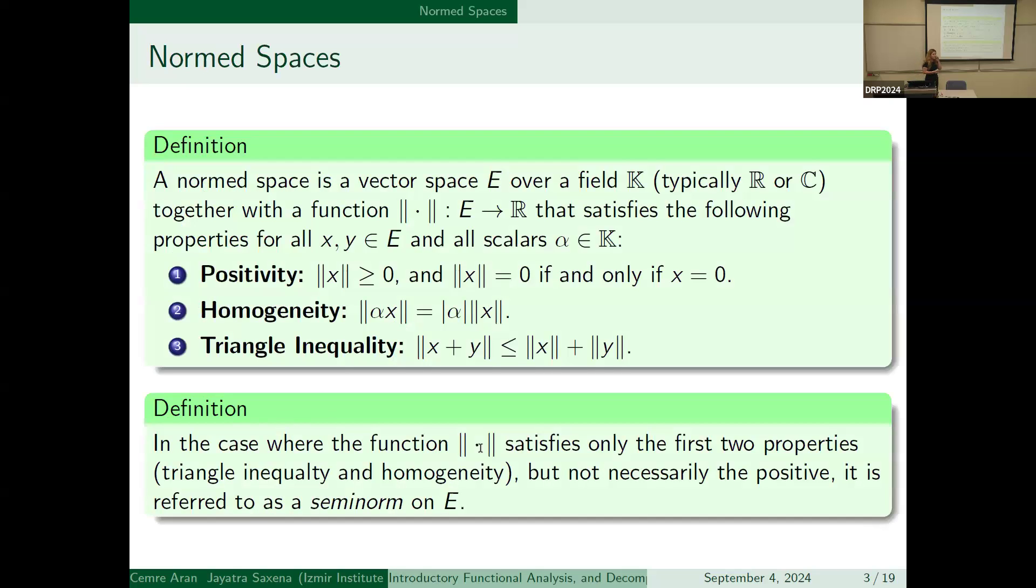A normed space is a vector space E over a field K, typically R or C, together with a function from E to R that satisfies these statements: positivity, homogeneity, and triangle inequality. In the case where the function satisfies only the first two properties, triangle inequality and homogeneity, but not necessarily the positivity statement, then it will be referred to as a seminorm on E.